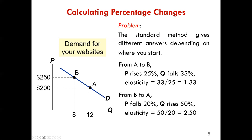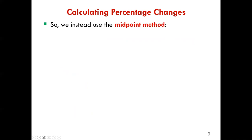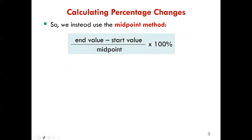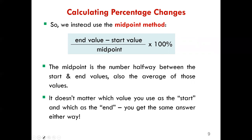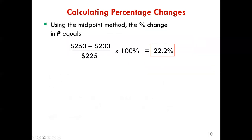To resolve this problem, we use the midpoint approach, which is an improvement upon the standard method. Instead of dividing by the start value, we divide the difference by the midpoint — the number halfway between the start and end values, also referred to as the average of the two values. Using this approach, it doesn't matter which value you start with; you get the same answer either way.